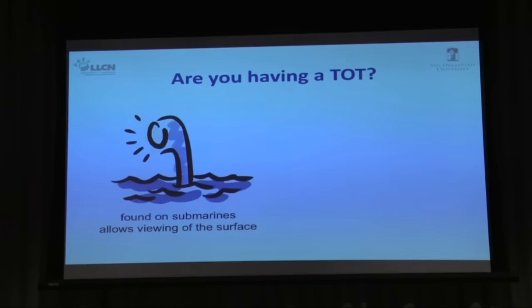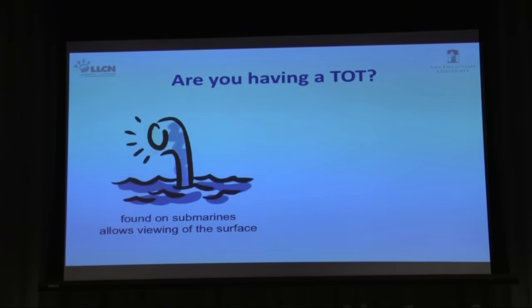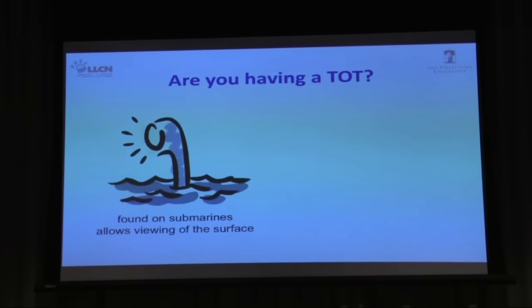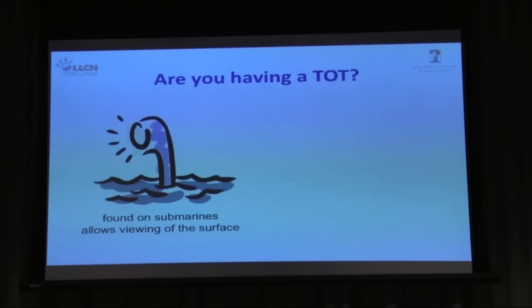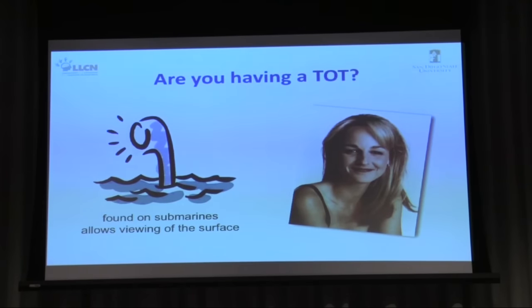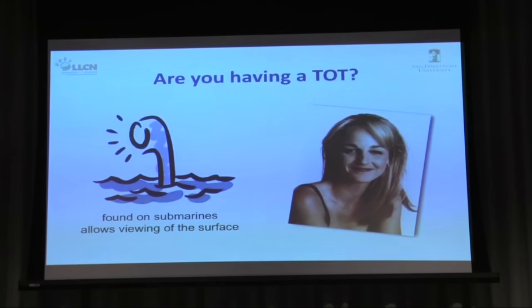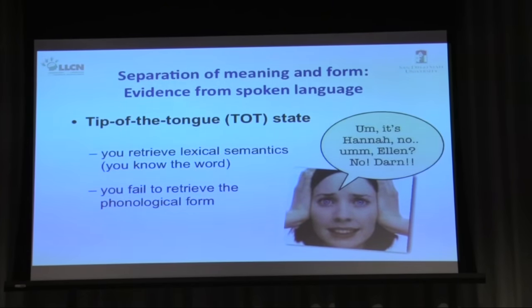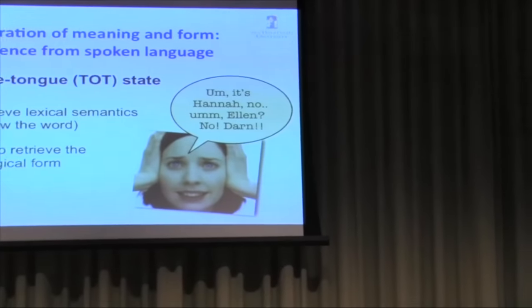The answer to the first example was 'periscope.' Tip-of-the-tongue is more common with proper nouns — names of cities, names of people — in part because there's really only one word you can retrieve; you can't paraphrase. For example, you may know all about this person, know she won an Academy Award for 'As Good as It Gets,' may even know what her name starts with, but in a TOT you wouldn't be able to retrieve her name — it's Helen Hunt. The evidence from TOTs shows that for spoken language, there really are two separate stages: you can retrieve meaning without retrieving form.